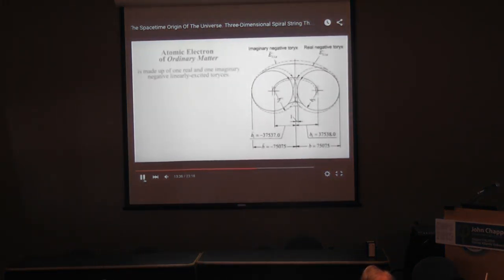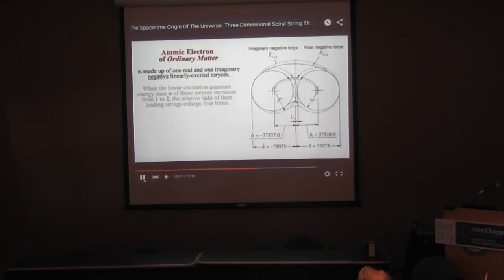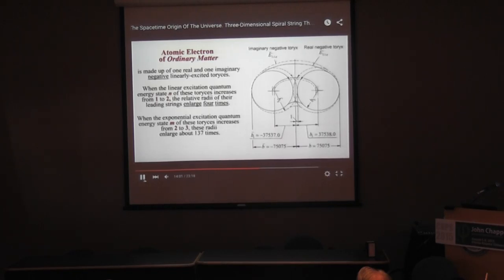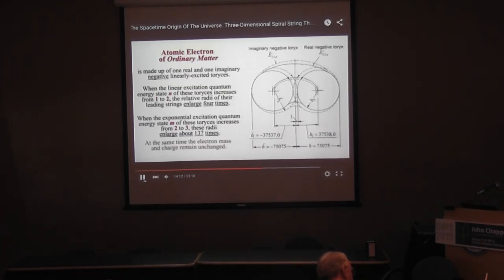Atomic electrons of ordinary dynamic matter are made up of one real and one imaginary negative linearly excited Torex. When the linear excitation quantum energy state N of these Torexes increases from 1 to 2, the relative radii of their leading strings enlarge 4 times. When the exponential excitation quantum energy state M increases from 2 to 3, these radii enlarge about 137 times. At the same time, the electron mass and charge remain unchanged.